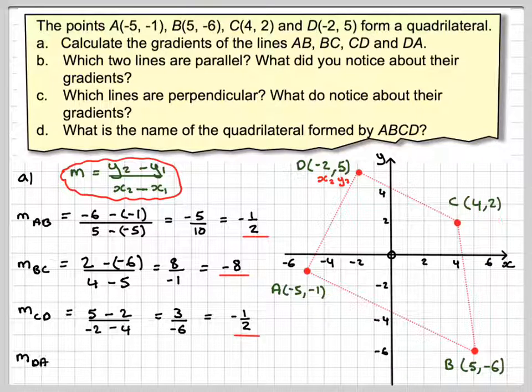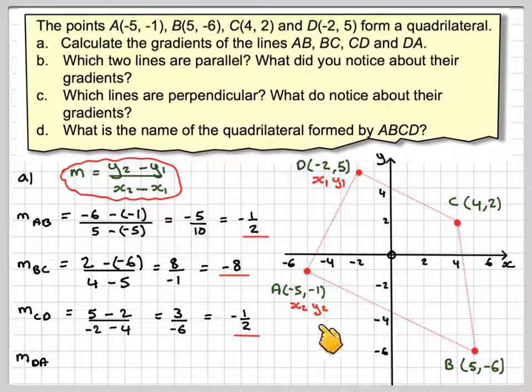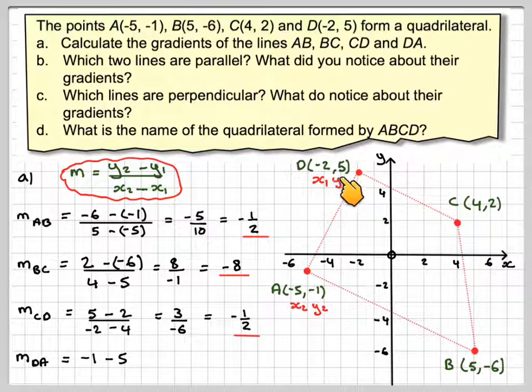And then for the last one, which is m_DA, this line here. So we're relabeling them, x₁, y₁, and then going back to label this x₂, y₂. We're going to get (-1 - 5) over (-5 - (-2)).